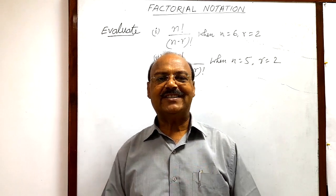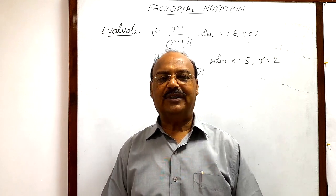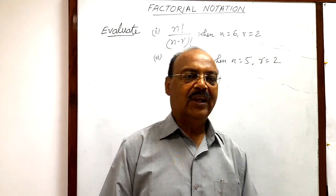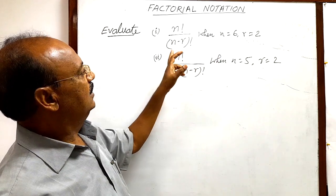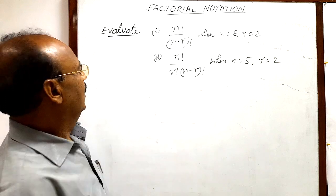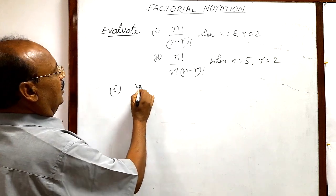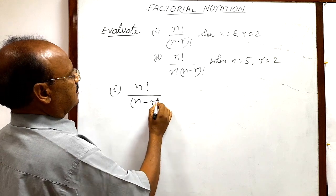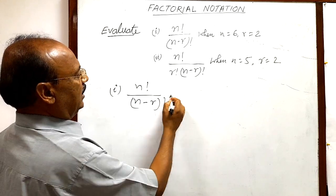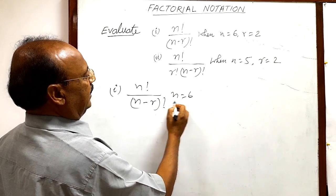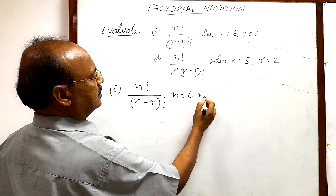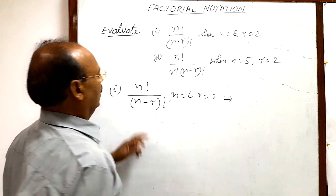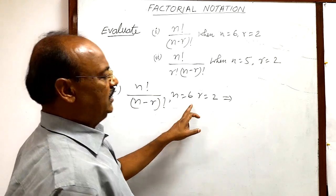Welcome students, today we are going to discuss some questions from the topic factorial notation. Questions are very simple and very interesting. We have these two questions — let us start with the first question. We have to evaluate n factorial divided by (n minus r) factorial, and the value of n is 6 and r is 2.